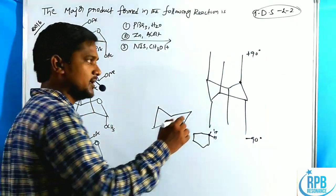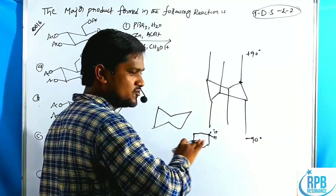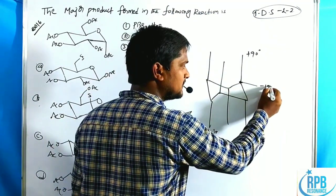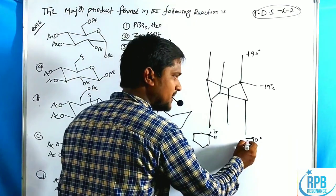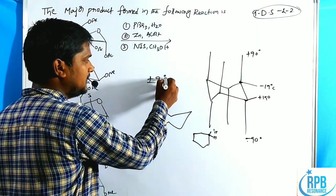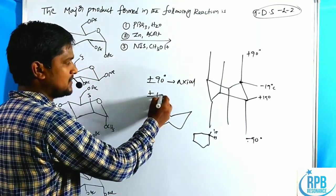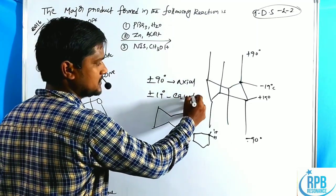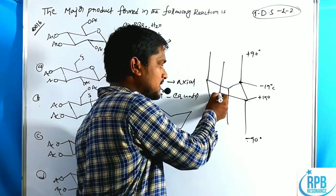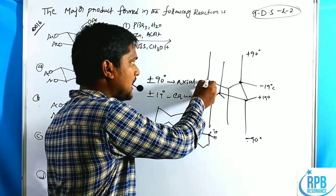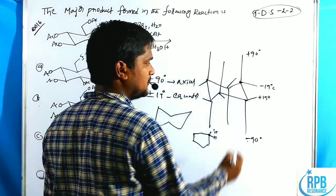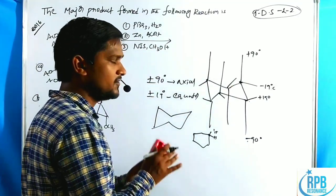The second position is closer to the equatorial. Here it is plus or minus 19 degrees. Plus or minus 90 degrees positions are called axial positions, and plus or minus 19 degrees positions are called equatorial positions. When the axial position is upward, the equatorial is downward, and when axial is downward, equatorial is upward. These are the axial and equatorial positions of cyclohexane.